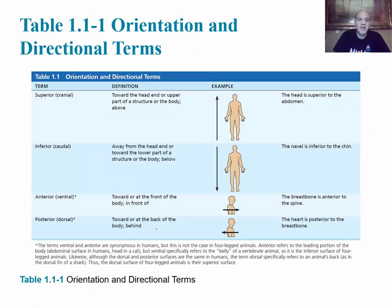Here is a table showing the directional terms. Superior and inferior are opposites. Superior means toward the head end or upper part of a structure, or above. An example: the head is superior to the abdomen. Inferior, which in humans is also called caudal, means away from the head or toward the lower part of the body, or below.